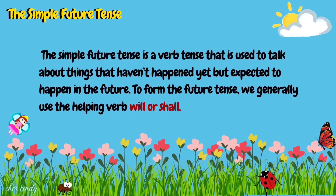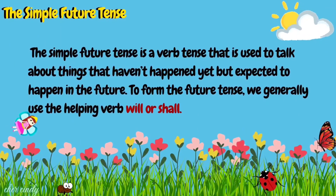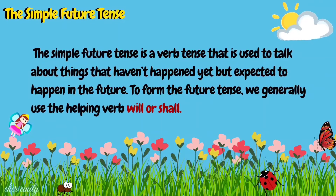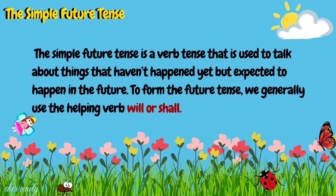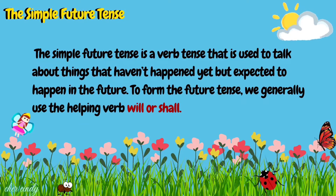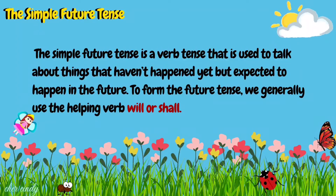Now let's have the simple future tense. The simple future tense is a verb tense used to talk about things that haven't happened yet but are expected to happen in the future. To form the future tense, we generally use the helping verb 'will' or 'shall.'